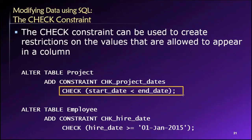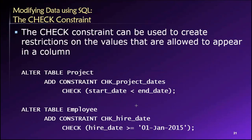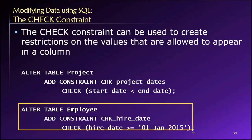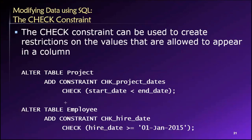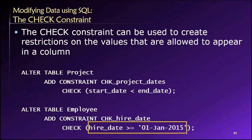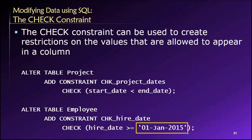So here's a check — in this case we're looking for a less than. Of course you can do greater than, less than or equal to, greater than or equal to, et cetera. Here's another example: we are adding a new check constraint to our employee table. What we're doing is checking to ensure that whenever we add a new employee record, the value of the hire date for the new employee is greater than or equal to, say, the 1st of January 2015.